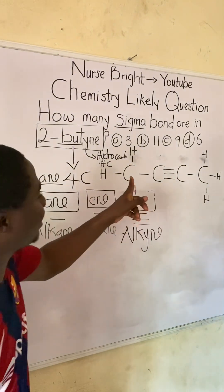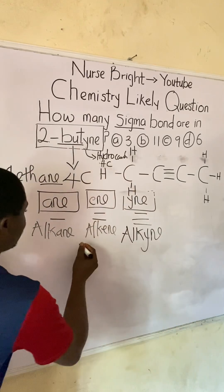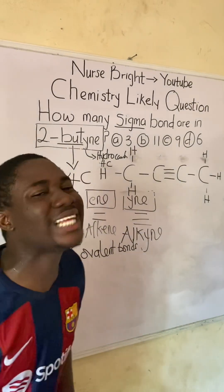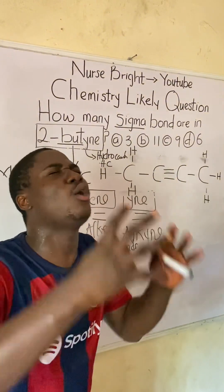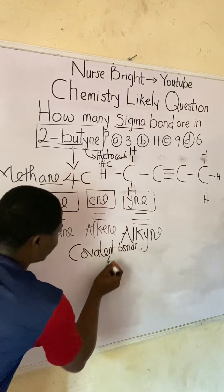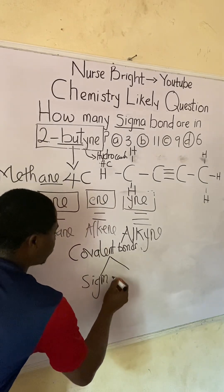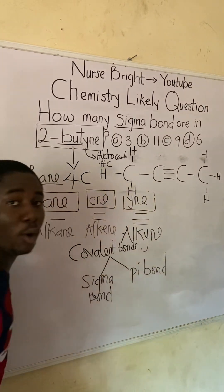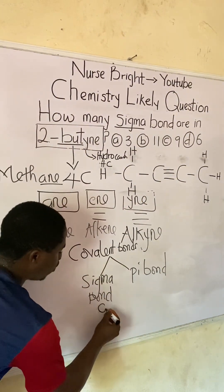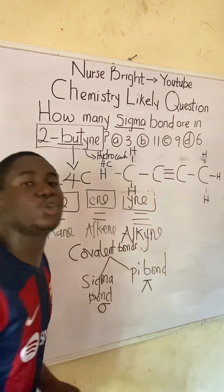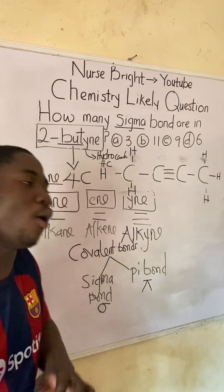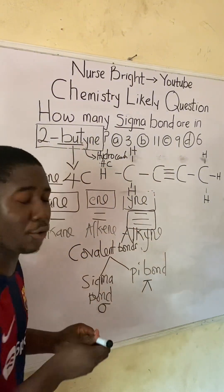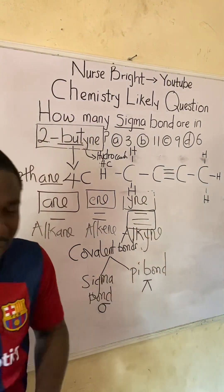In organic compounds, as you can see here, all of these bonds are covalent bonds — not electrovalent bonds. Covalent bonds in organic chemistry can be of two types: sigma bond or pi bond. Sigma bond is denoted with the symbol σ, and pi bond is denoted with the symbol π. So how do we know whether a particular bond is a sigma bond or a pi bond? Let me explain using the triple bond here.